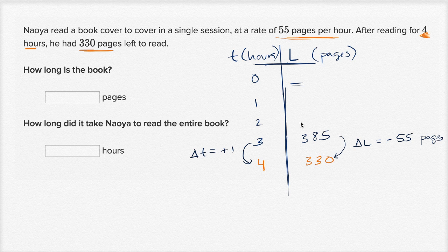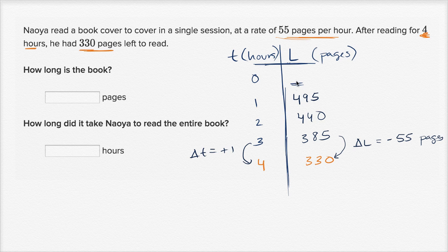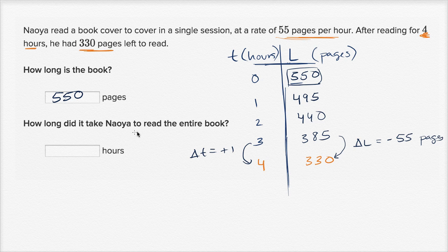At two hours, he should have 55 more pages to read: 385 plus 55 is 440. After reading for one hour, he would have 55 more pages than after two hours: 440 plus 55 is 495. Before he started reading — at time zero — he would have had 55 more pages, since after one hour he would have read those 55 pages. So 495 plus 55 is 550 pages. At time zero, he had 550 pages to read — that's how long the book is.